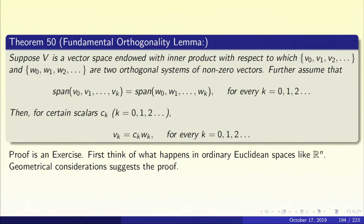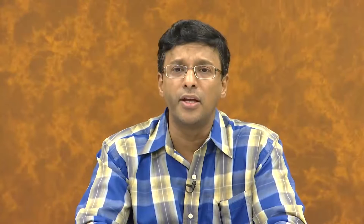Further assume that the linear span of V0, V1, ..., Vk is the same as the linear span of W0, W1, ..., Wk, for every k = 0, 1, 2, 3, etc. I flag this clause — for every k equal to 0, 1, 2, 3, etc. Then the conclusion is that Vk is a multiple of Wk for every k.